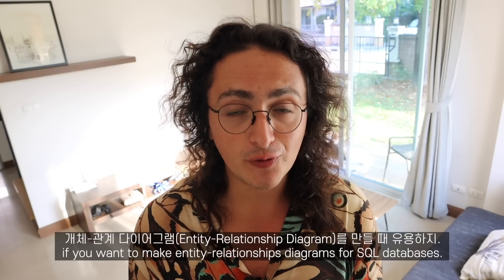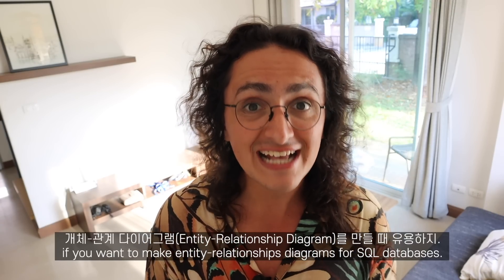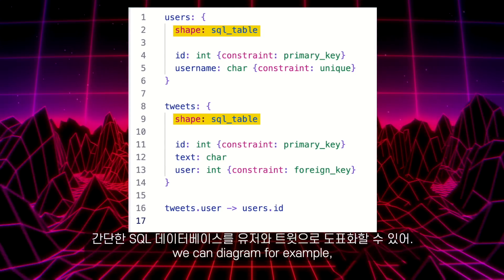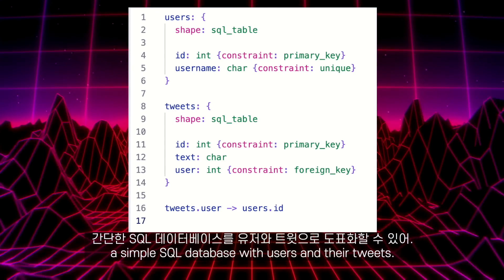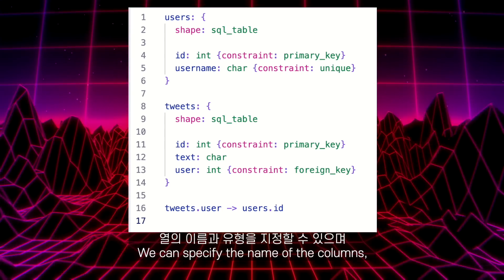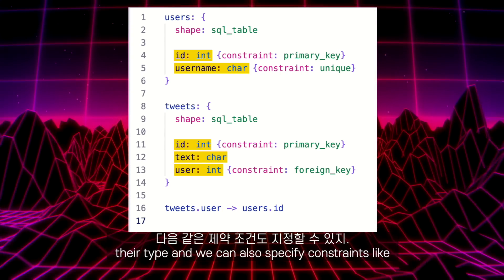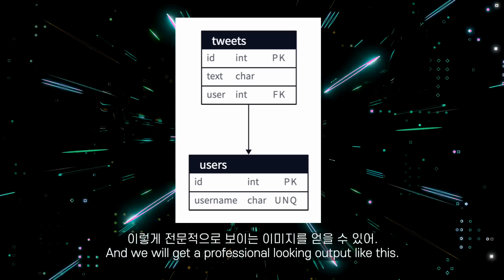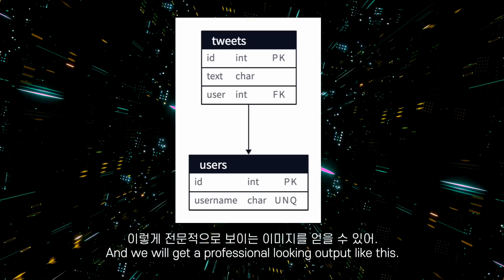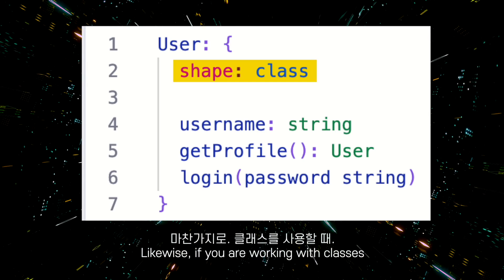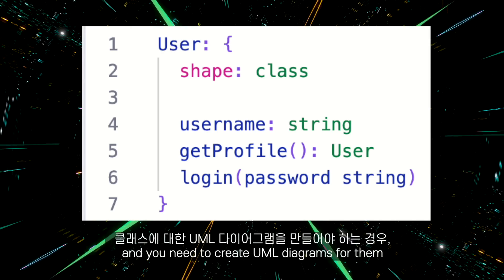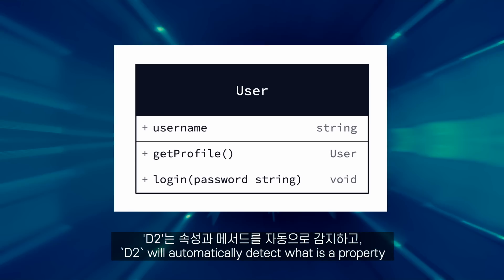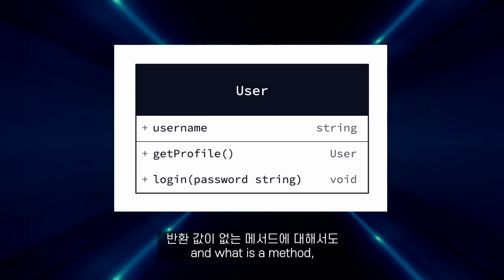D2 is also super useful if you want to make entity relationship diagrams for SQL databases. Using the SQL table shape, we can diagram, for example, a simple SQL database with users and their tweets. We can specify the name of the columns, their type, and we can also specify constraints like primary key, unique, and foreign key. And we will get a professional-looking output like this. Likewise, if you are working with classes and you need to create UML diagrams for them, you can use the class shape. D2 will automatically detect what is a property and what is a method.